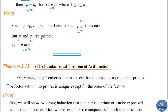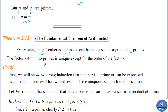Now we have the Fundamental Theorem of Arithmetic. The statement of the theorem is: every integer n ≥ 2 either is a prime or it can be expressed as a product of primes, and the factorization into primes is unique except for the order of the factors. There are two parts to the proof. The first part is to show that any integer is a prime or can be expressed as a product of primes, proved by strong induction. The second part is the uniqueness of the factorization.